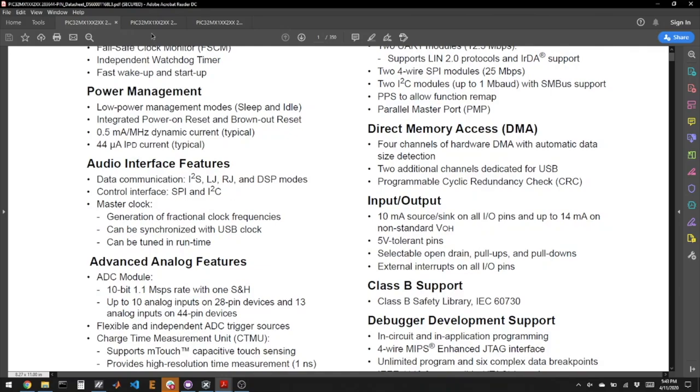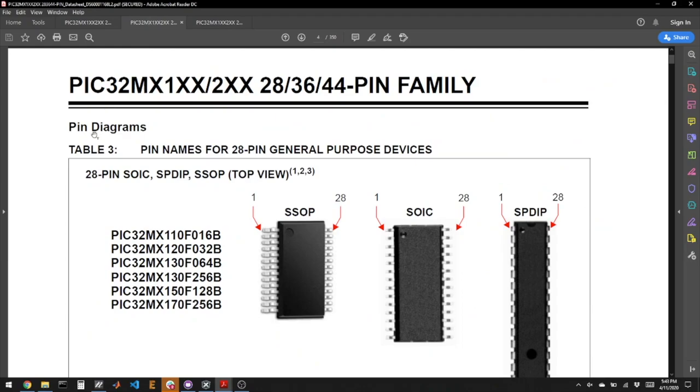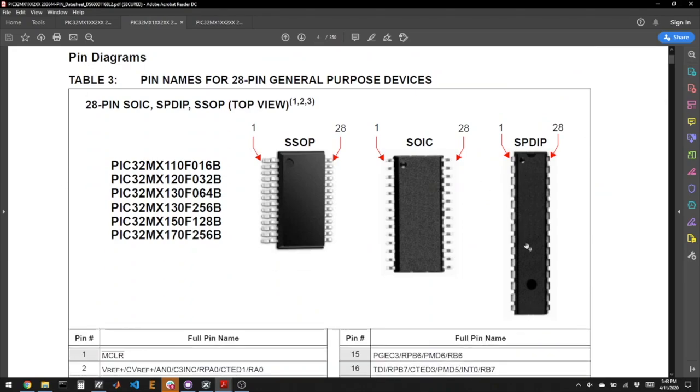What we're interested in right now is the pin out. We have the DIP version of this chip. We can see it's the 170F256B. This data sheet covers a lot of different PICs that are kind of similar so you want to pay close attention to make sure every time you look at a page it covers our specific PIC.